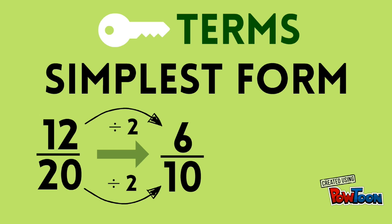Is this fraction in simplest form? No. Even though I simplified it by dividing both the numerator and denominator by 2, it is not yet in simplest form. Looking at 6 tenths, I can see that both the numerator and denominator can be divided by 2 again. So I can simplify the fraction once more.